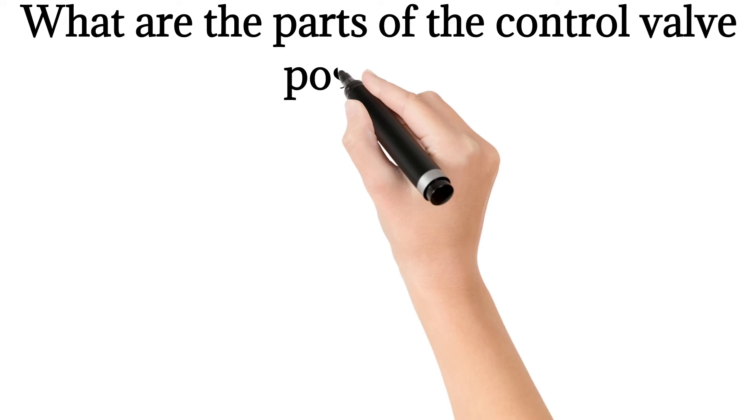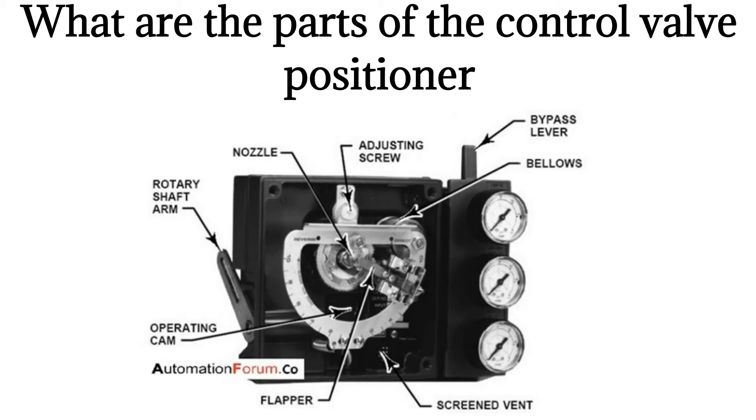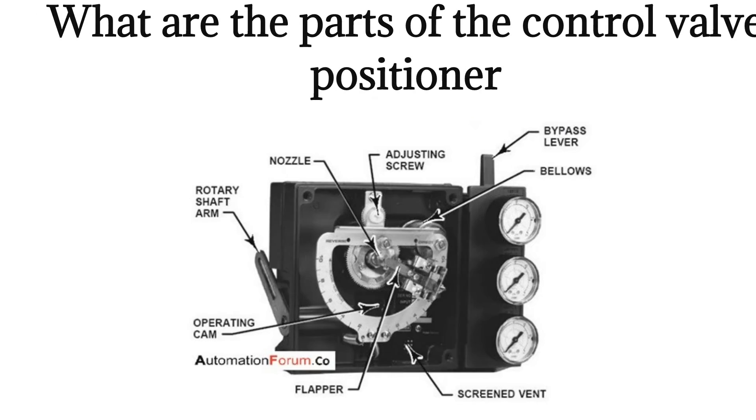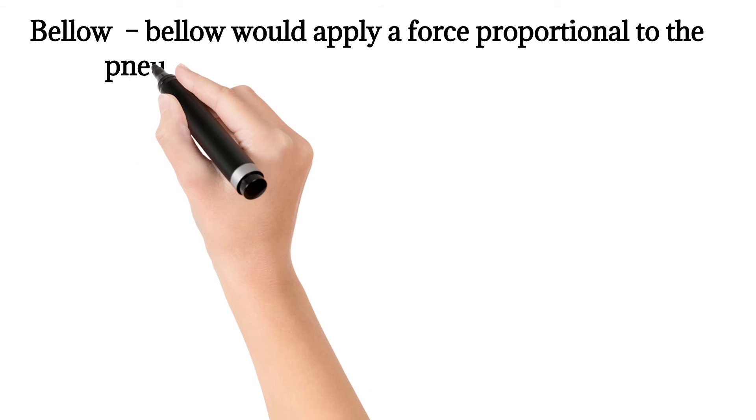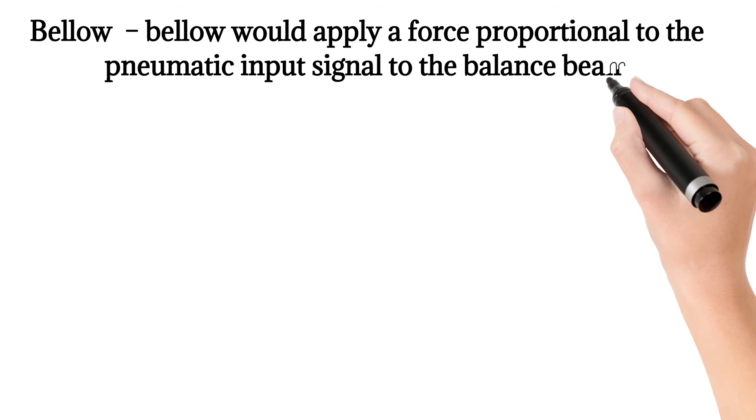What are the parts of the control valve positioner? Bellow - bellow would apply a force proportional to the pneumatic input signal to the balance beam spring.